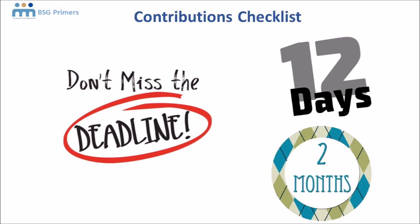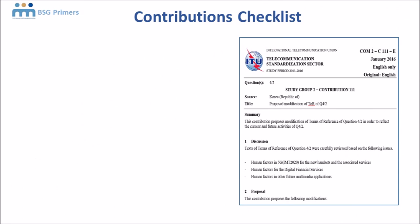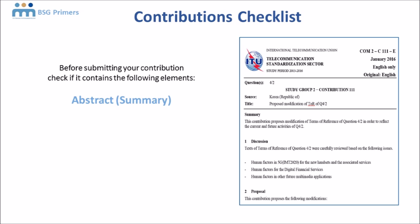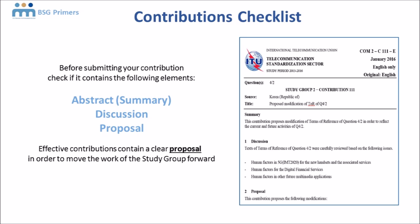So what does a contribution look like? Basically it's a Word document in the correct study group template, which should contain three key elements. The first is an abstract — the summary of the contribution. The second is a discussion or rationale, and the third, most important part, is the proposal. Effective contributions always contain a clear proposal that can help move the work of the study group forward.